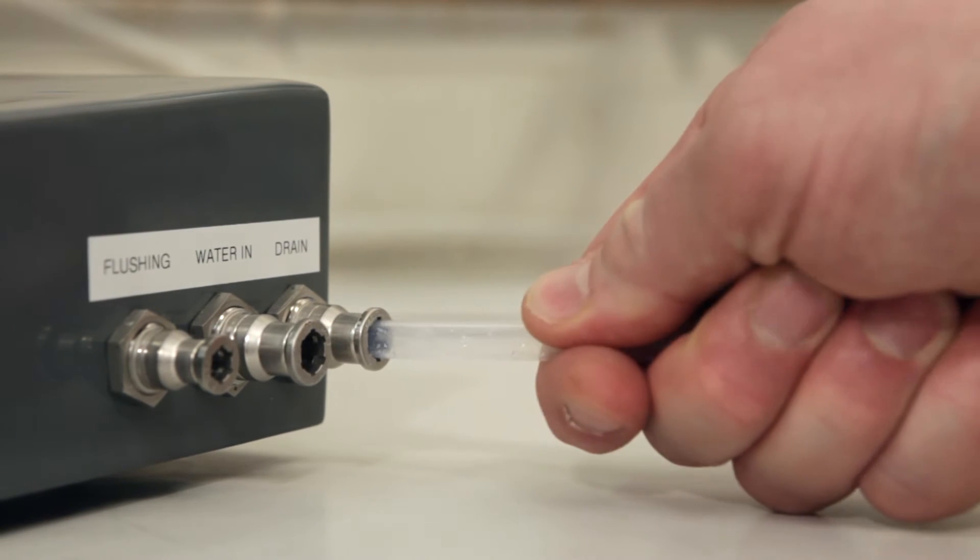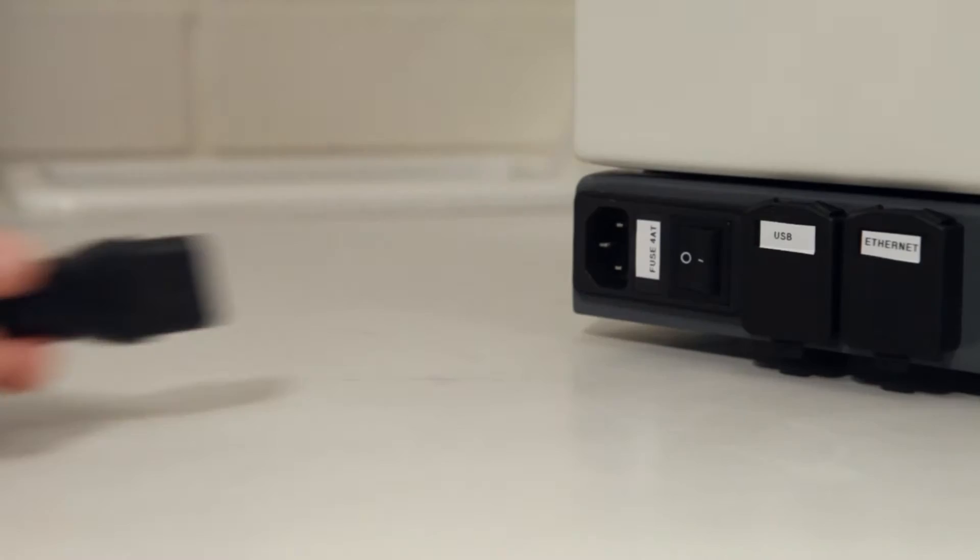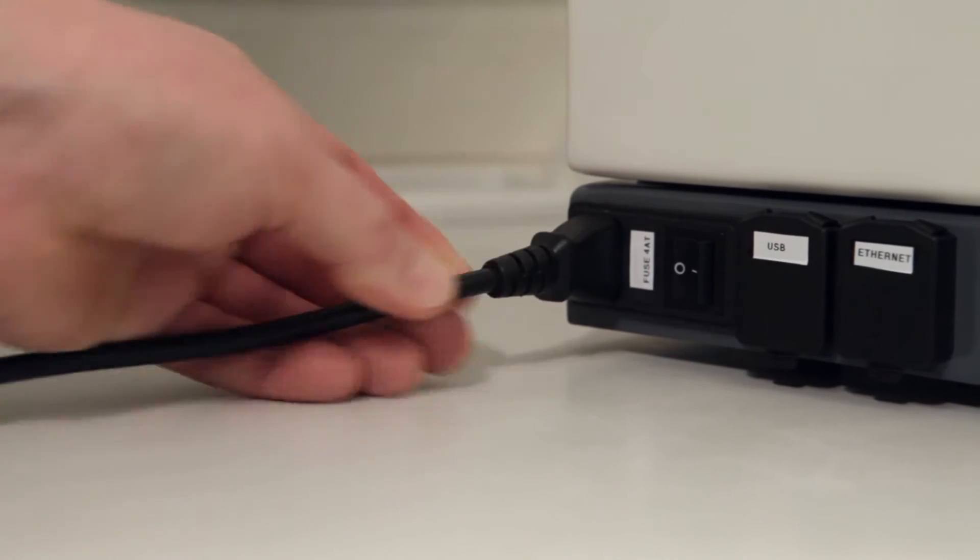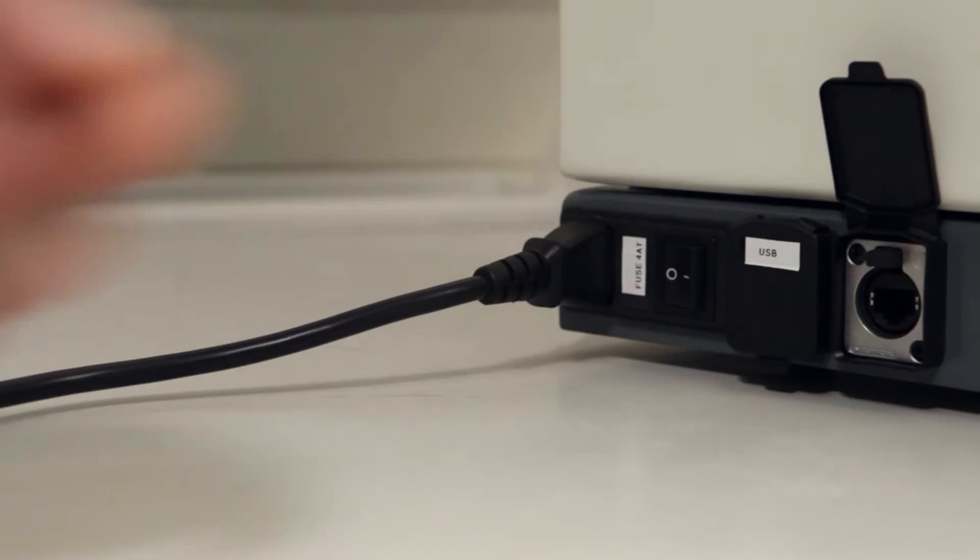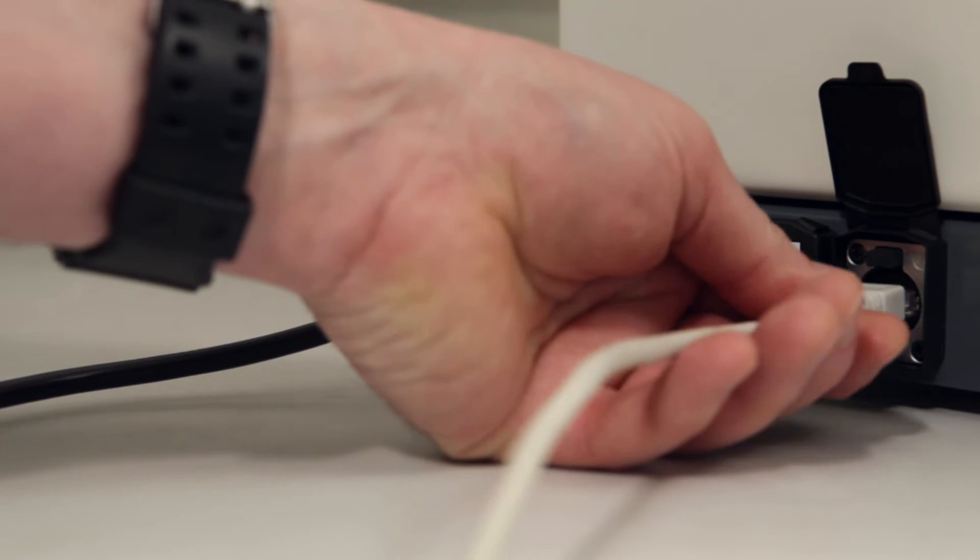Getting the unit up and running is fast. It only takes a matter of minutes. Simply hook the Valmet FS5 up to the water lines, the mains and the network and start analyzing.